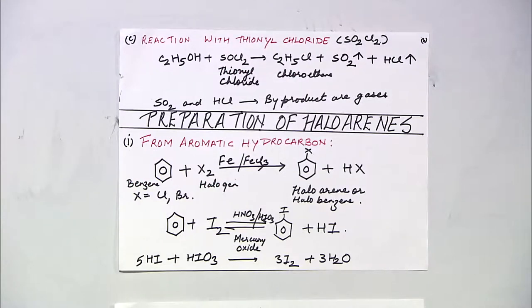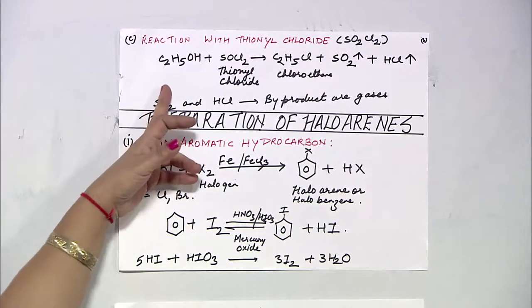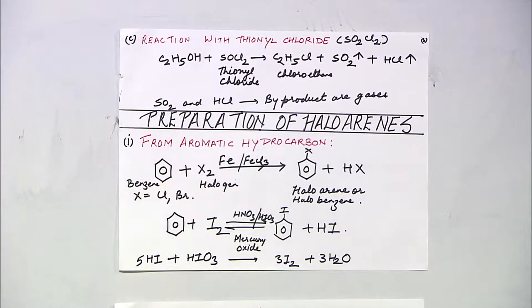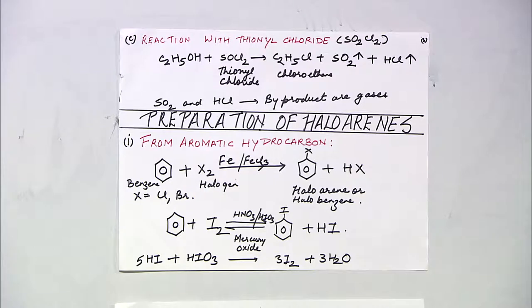Haloalkanes can also be prepared using thionyl chloride SOCl2. Alcohol reacted with SOCl2 gives chloroethane, SO2, and HCl. Since both SO2 and HCl are escapable gases, this is considered the best method for the preparation of haloalkanes.